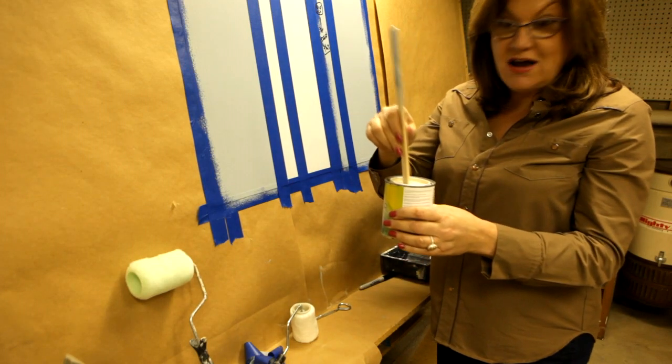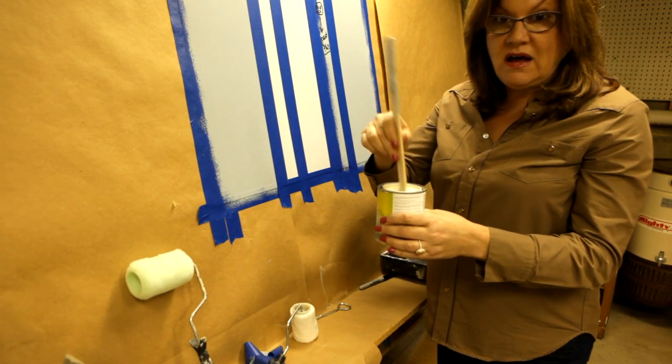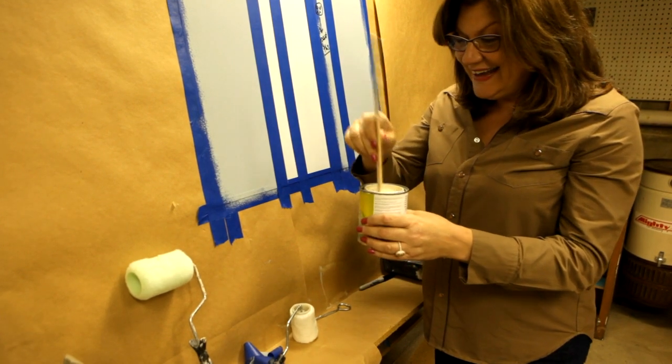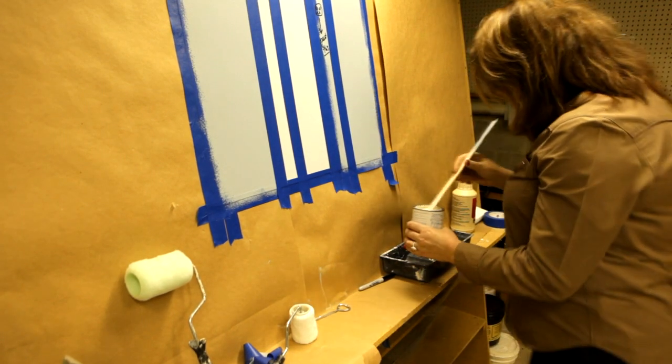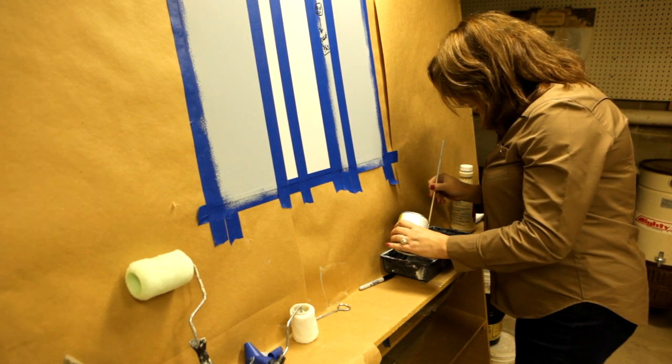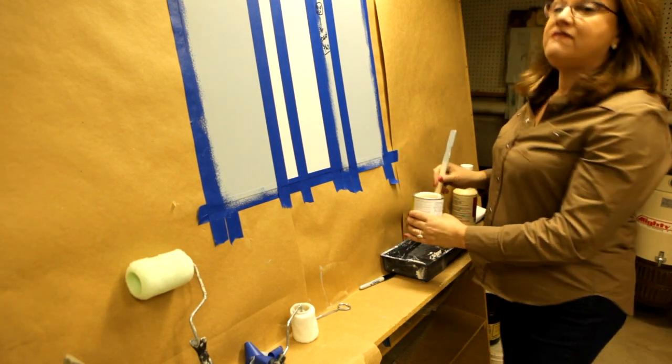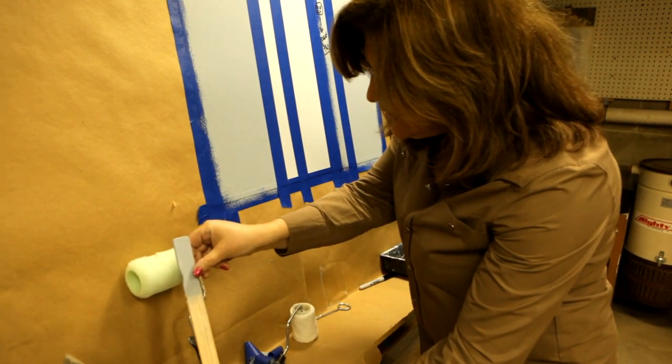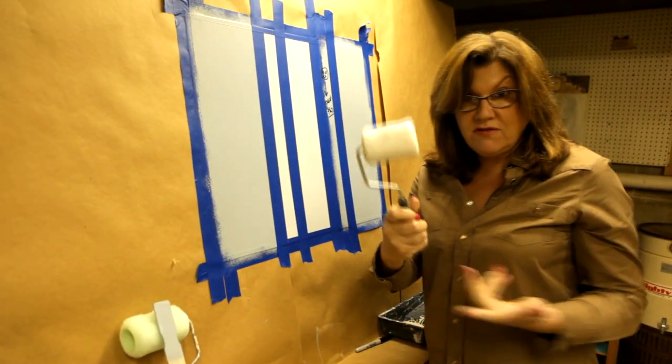This is Benjamin Moore hazy skies color. This will be my accent color that will really make the whole difference. So I'm mixing it up. Always mix up, always stir the paint before you use it. And I pour it in a small tray. And the reason I'm only using a small tray because this is a very thin stripe. It's only one and a half inches stripe. So I don't need a large roller. I'm using the smallest possible three inch roller for that stripe.